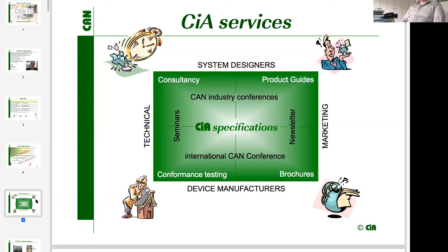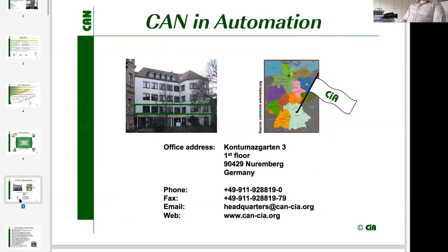On the other hand, we provide technical events, seminars, consultancy services, and so on to assist people in using CAN in their applications. If you want to contact CAN Automation, it's easier now in an electronic way — via phone, via email, or via social media channels.